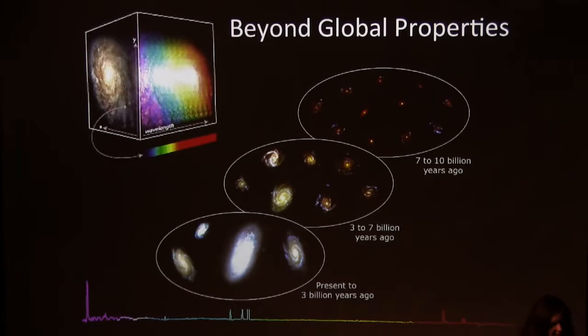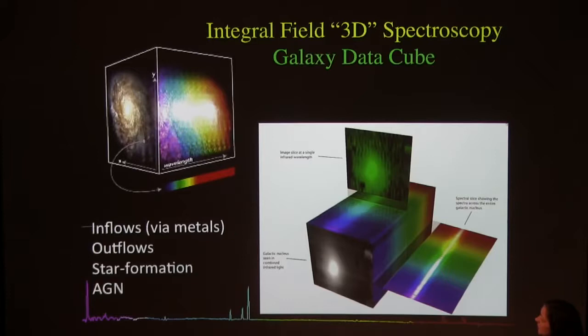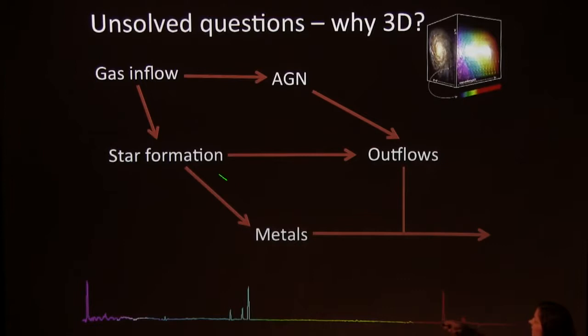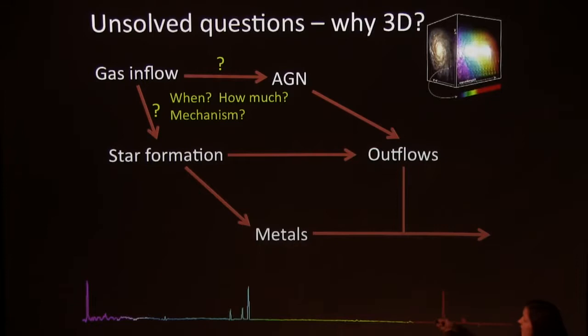We made good measurements of the metallicity and star formation history of galaxies, but we want to move beyond global properties. Using integral field spectroscopy we can probe inflows, outflows, star formation, and AGN. We're aiming to answer fundamental questions about galaxy evolution. If you imagine a galaxy — the bathtub model — you have a gas reservoir causing inflow, which may trigger star formation and produce metals. Star formation may also drive outflows. We don't know how much metals are lost in the outflows. The gas inflow might also drive an AGN, which may also drive outflows.